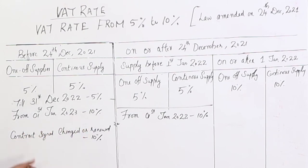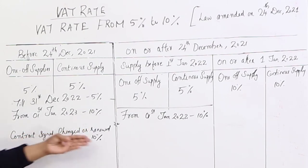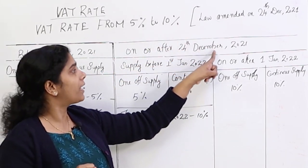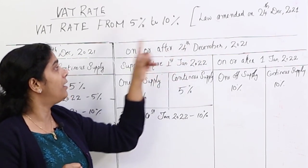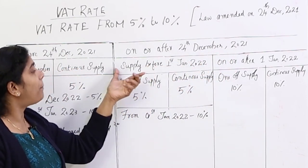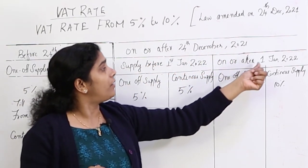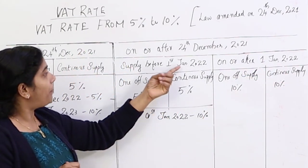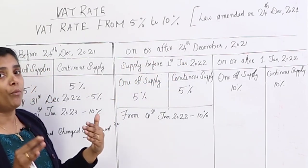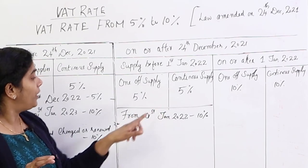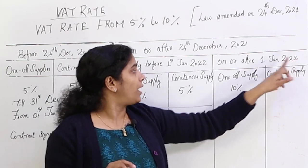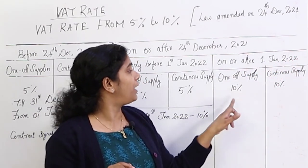For one-off supply and continuous supply signed before 24 December: the rate is 5% until 31 December 2022, and from 2023 it is 10%. If the contract is changed or amended, 10% applies automatically. For contracts signed on or after 24 December 2021, supply before 1 January 2022 is 5%, and on or after 1 January 2022 is 10%.